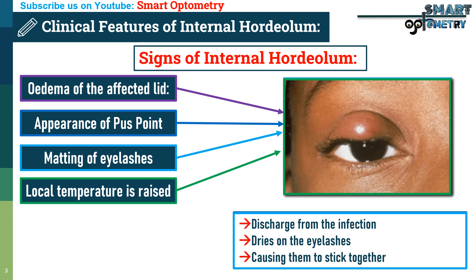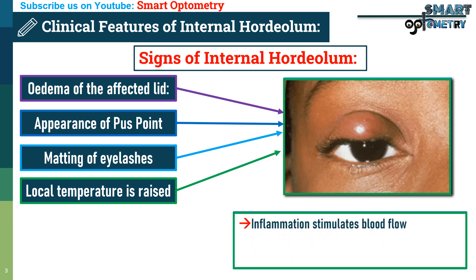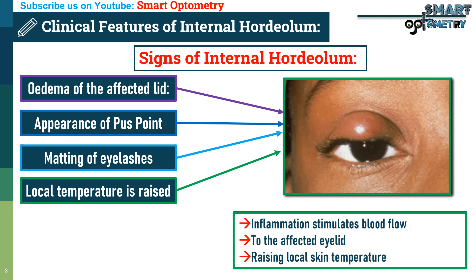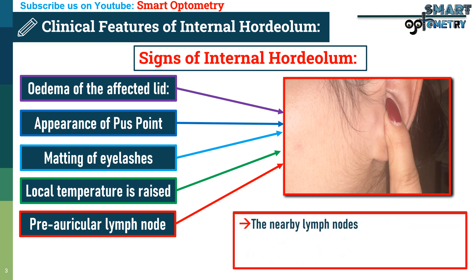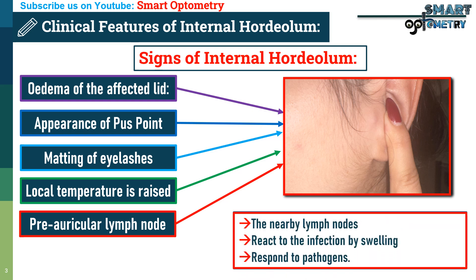4. Local temperature is raised — inflammation stimulates blood flow to the area, raising local skin temperature. 5. Enlargement of the preauricular lymph node — the nearby lymph nodes react to the infection by swelling as they filter and respond to pathogens.